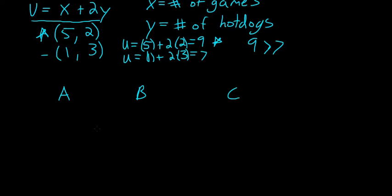And for some utility function, let's say utility function one, bundle A gives me one unit of happiness, B gives me 10, and C gives me 11. What this would tell me is that C is preferred to B, which is preferred to A. C is the one that gives me the most happiness.